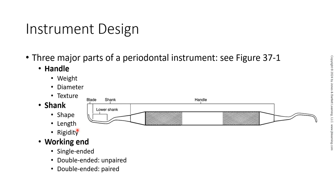For the working end, you have a single end, double end, or paired. You can have a paired or unpaired working end. For instance, your explorer is unpaired, because on one end it's the shepherd's hook, and on the other end it's the TU-17.